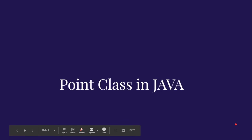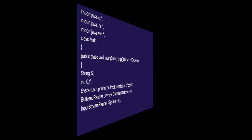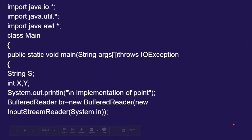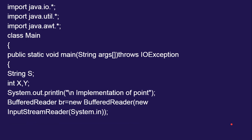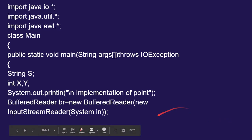Hello everyone. In this video we are going to see about the Point class in Java. The Point class helps to plot a point on the screen. By connecting the points you can draw a vertical line, horizontal line, or any polygon. Let us see how we can draw a polygon using this Point class.